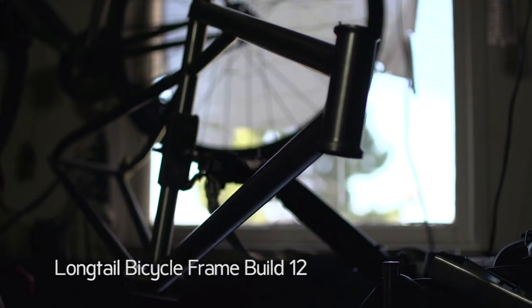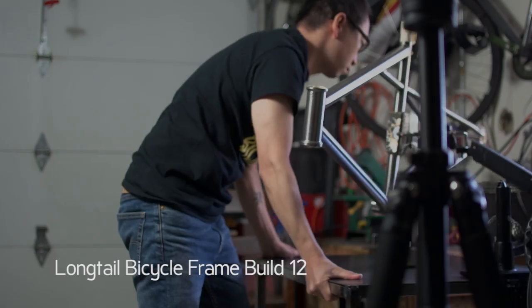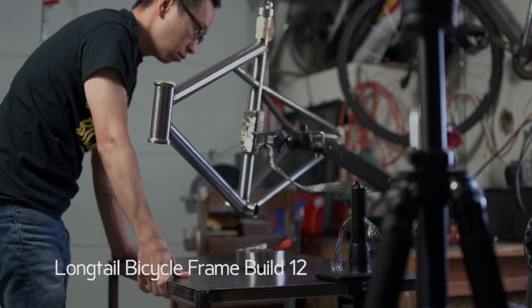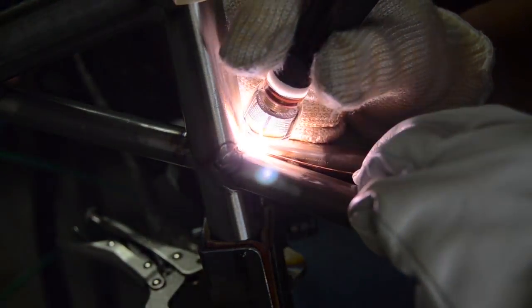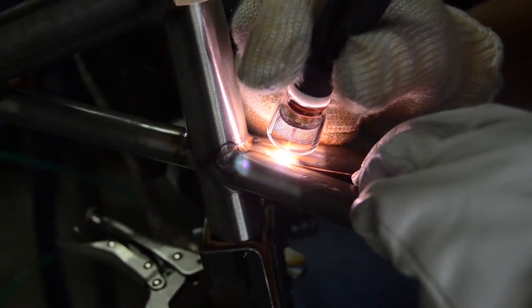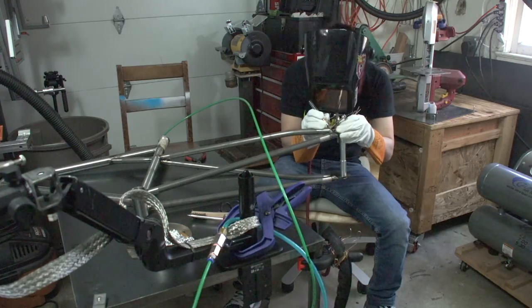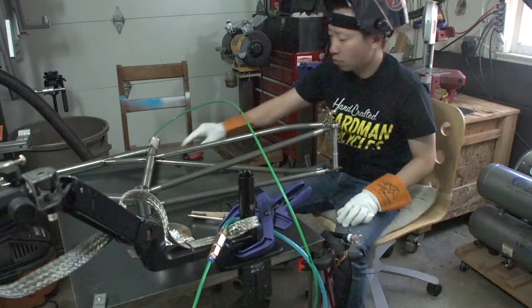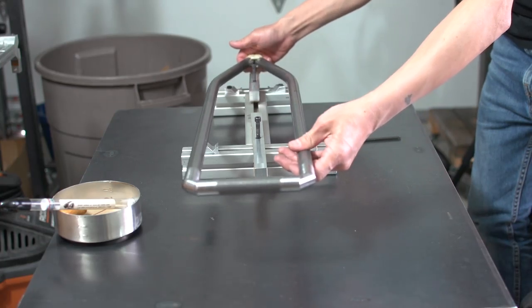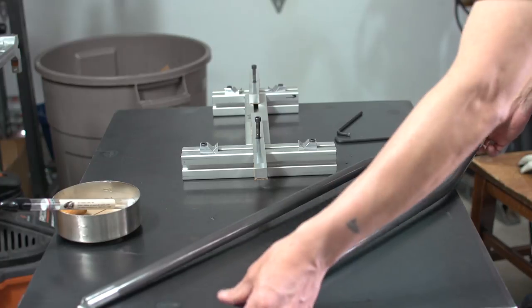Hey guys, welcome back. This is the long tail build series video number 12. In the last video we welded the seat stays onto the main triangle. In this video we need to finish where we left off and get the rear dropouts welded, and then after that onto the integrated rear rack.